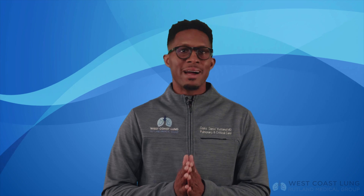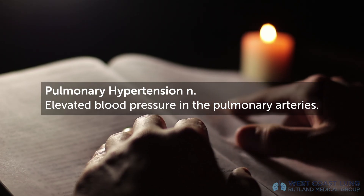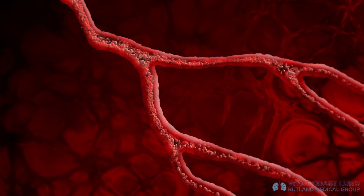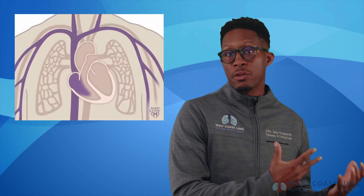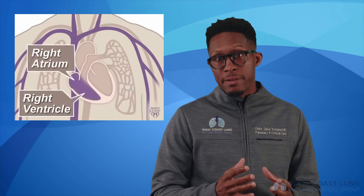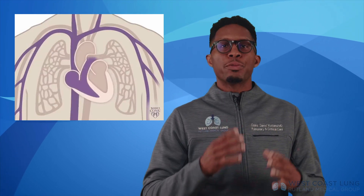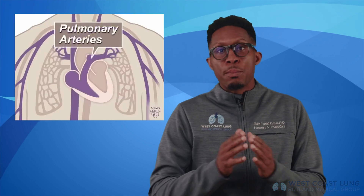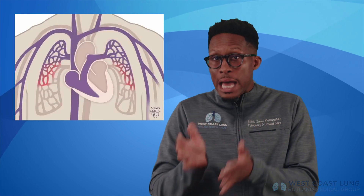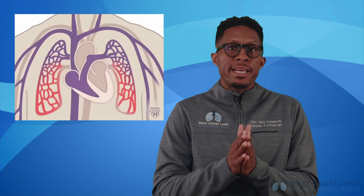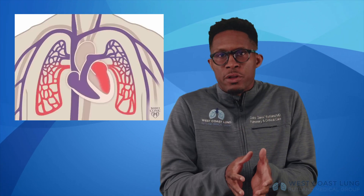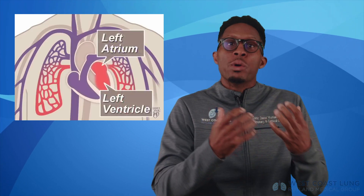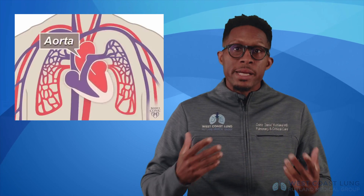Pulmonary hypertension is simply defined as elevated blood pressure in the pulmonary arteries. Blood is collected in the veins of the body after being delivered to all the organs. The veins send blood to the right atrium, through the tricuspid valve to the right ventricle, which pumps it through the pulmonary artery, then to the arterioles and capillaries where gas exchange takes place, then to the left atrium, left ventricle, and on to the rest of the body. Pulmonary hypertension, or PH, is elevated pressure in the pulmonary artery.